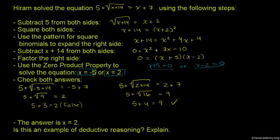Checking x = -5 in the original equation: 5 + √(-5+14) = 5 + √9 = 5 + 3 = 8, but -5 + 7 = 2. Since 8 ≠ 2, this is false.